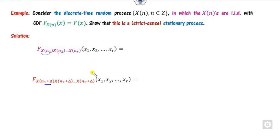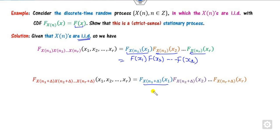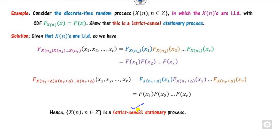Since the variables are independent, we know that for independent variables the joint distribution is the product of the marginals: f(x,y) = f(x)·f(y). Since they are i.i.d., we can write the joint distribution in product form. The distribution is independent of n, so we get f(x₁)·f(x₂)·...·f(xᵣ) on both sides. The right-hand sides are equal, meaning the distribution is independent of the time index. Hence this is a strict sense stationary process.